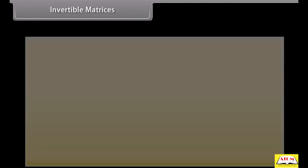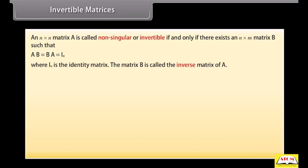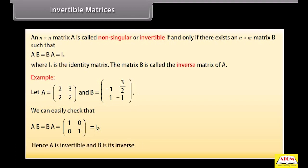Invertible matrices: An n-by-n matrix A is called non-singular or invertible if and only if there exists an n-by-n matrix B such that AB equals BA equals I_N, where I_N is the identity matrix. The matrix B is called the inverse matrix of A. For example, given matrices A and B, we can easily check that AB equals BA equals the identity matrix. Hence A is invertible and B is its inverse.